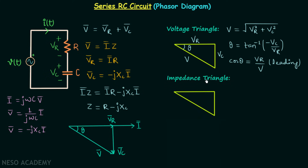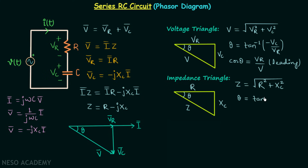For the impedance triangle, the angle is theta, the base is resistance R, the perpendicular is reactance XC, and the hypotenuse is impedance Z. The impedance Z equals √(R² + XC²), the power factor angle theta equals tan⁻¹(−XC/R), and the power factor cos theta equals R/Z. It will be leading.